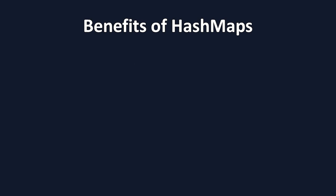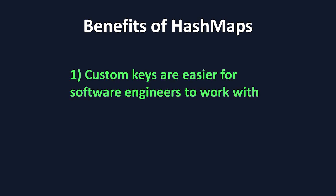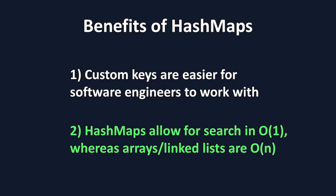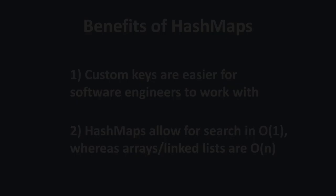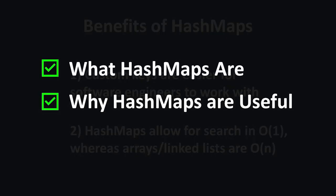HashMaps are useful for two main reasons. The first is, when working with big software systems, readability becomes incredibly important, and being able to customize keys can be quite helpful. The second is that HashMaps allow for searching of specific values in O(1) runtime, which is faster than arrays and linked lists, which have a search time complexity of O(N). Now you know what HashMaps are and why they're useful.